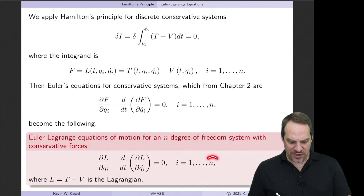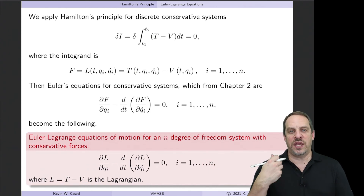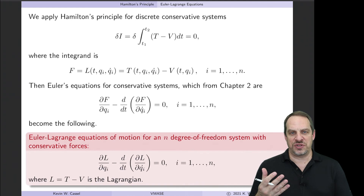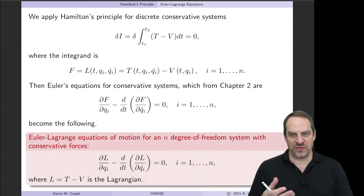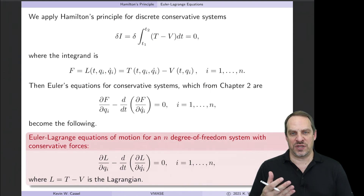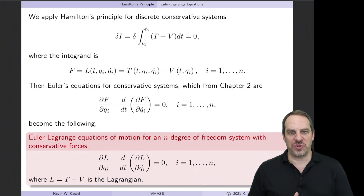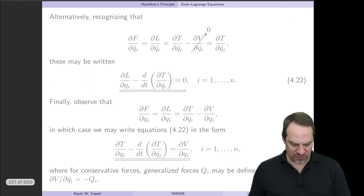Because there are n equations — corresponding to the number of degrees of freedom — we get n coupled ordinary differential equations for q1(t), q2(t), through qn(t). This is completely consistent with what we saw in chapter 2.